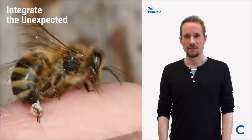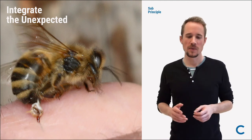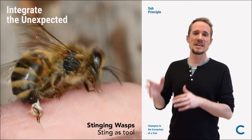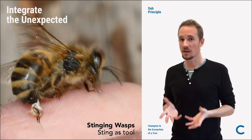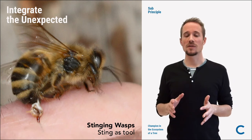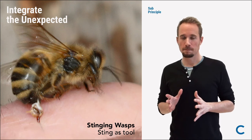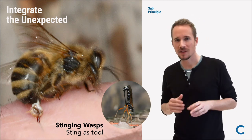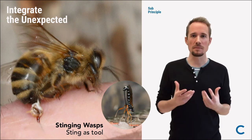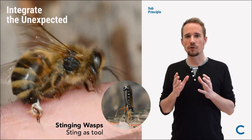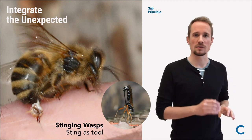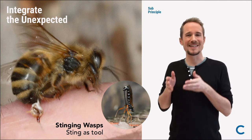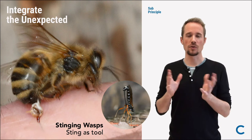Integrate the unexpected. Our example in nature for this principle: stinging wasps, or by a more complicated name, aculeata — so bees, wasps, ants. They all have a venomous sting and they use it. The question is, how did it develop? It's a fascinating story, because ancestors of these insects used to have a part of their body, an organ, kind of like a sting, that they used for laying their eggs. The female insects used this ovipositor — as it's called — for laying their eggs: burrowing in the soil, laying the eggs with the ovipositor, or actually placing the egg in or on a plant, or even placing the egg inside of another animal, if you're a parasitic wasp.